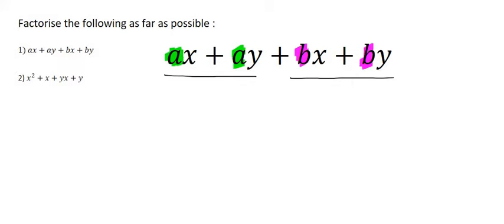And so what you can do is factorize each part separately. So in the first two terms, we'll take out an a, and then what would we have left? Well, in the first term you would still have an x, and in the second term you would still have a y. Then what are we going to factorize out in the next term? A b, right?